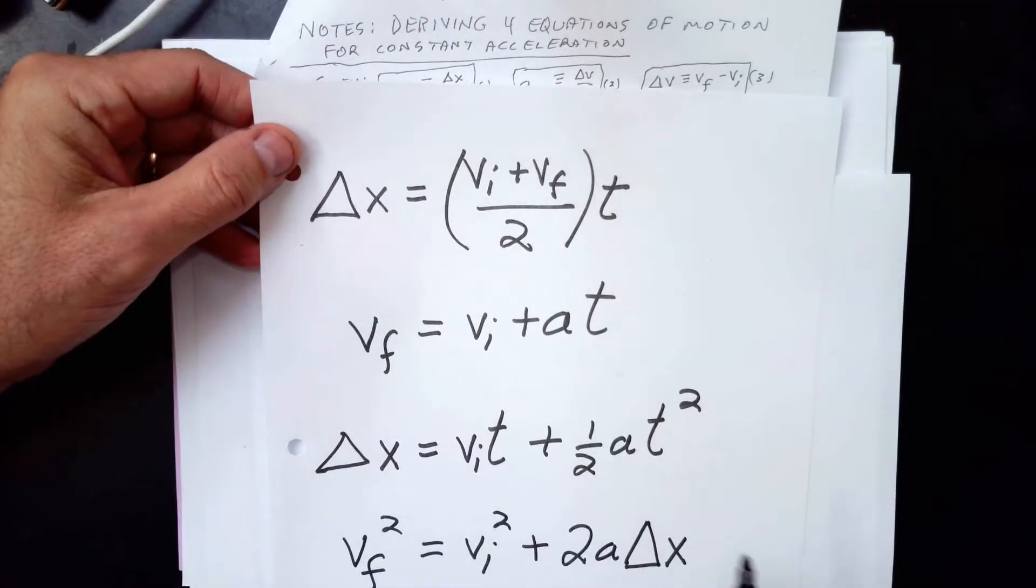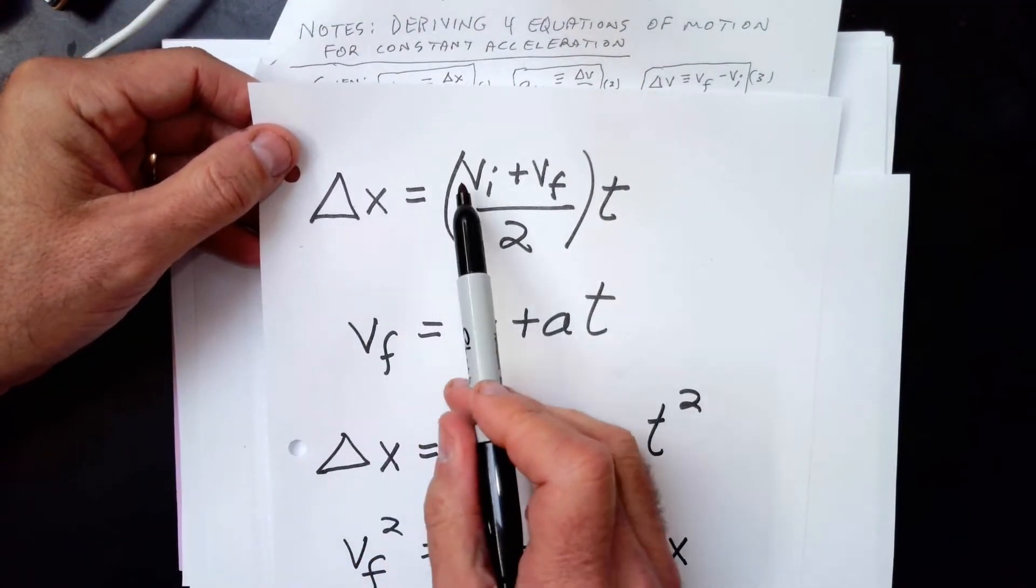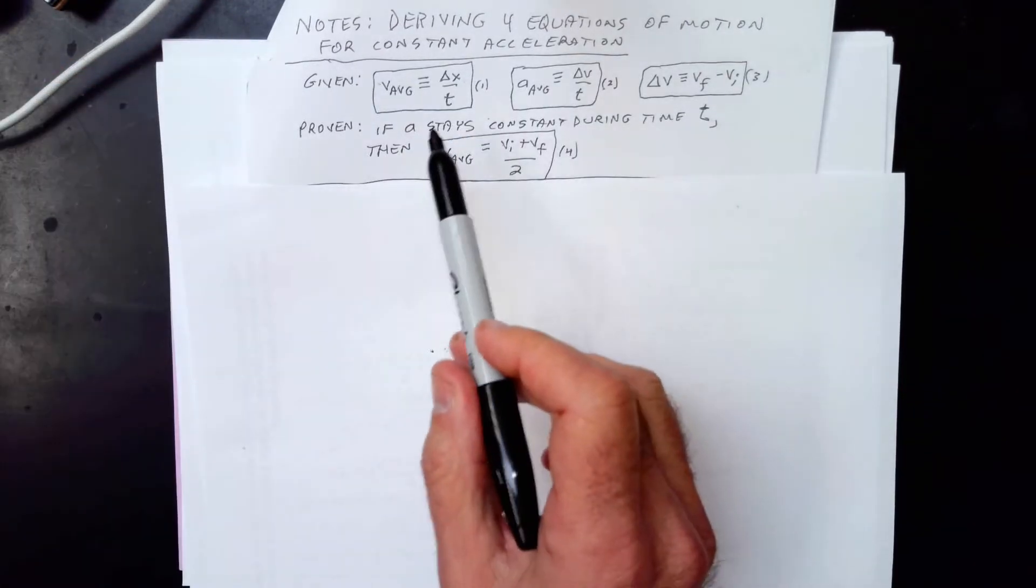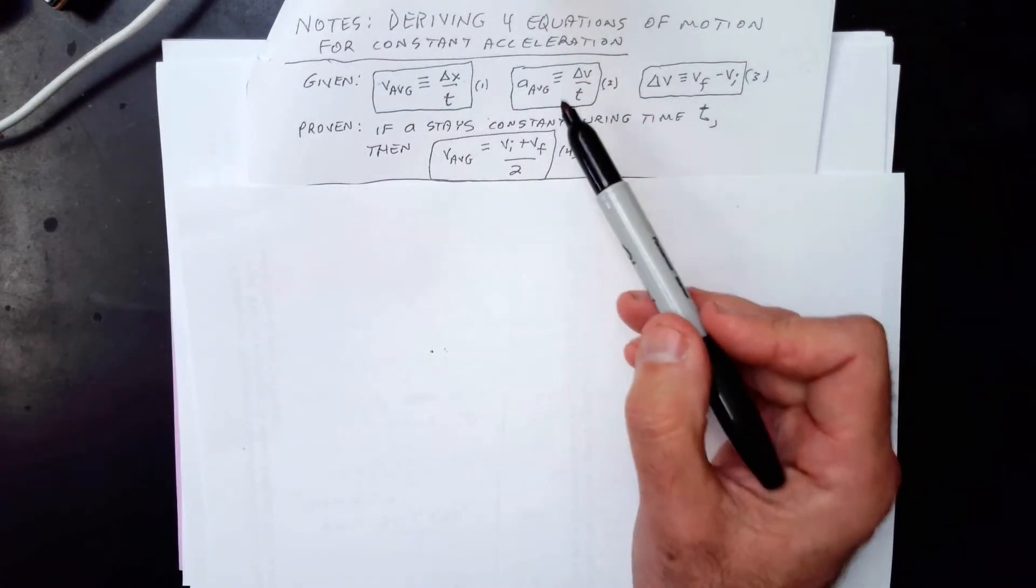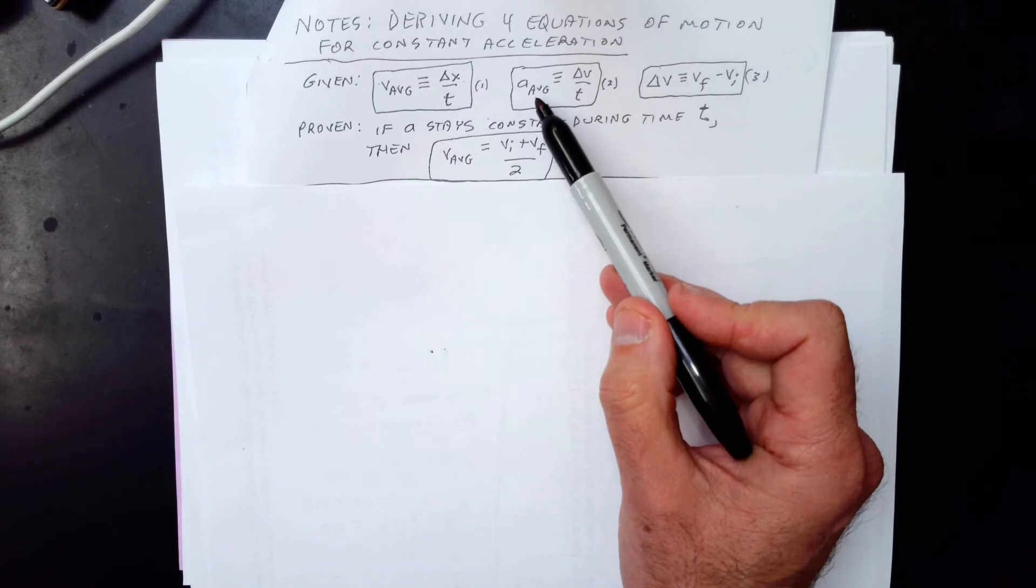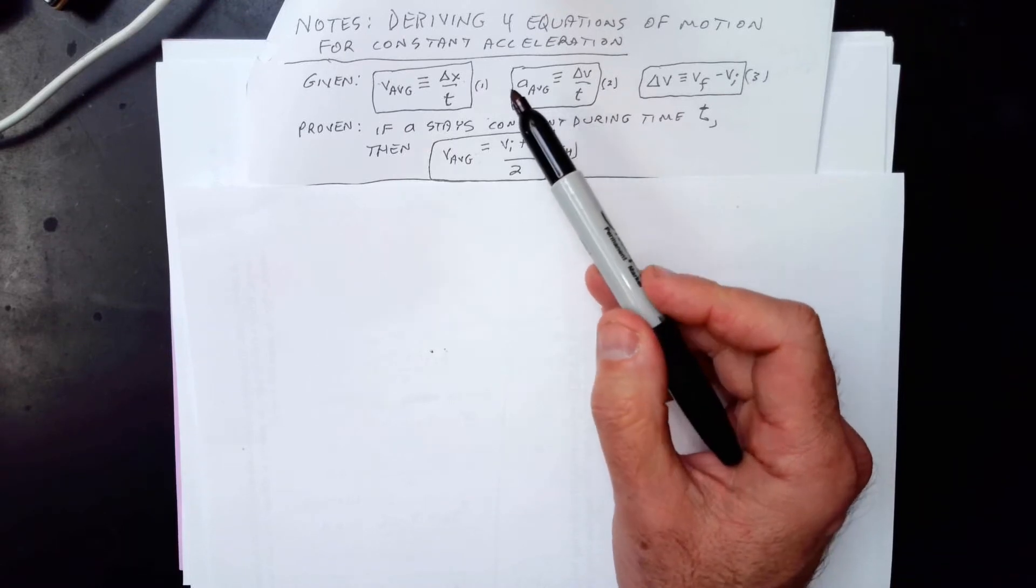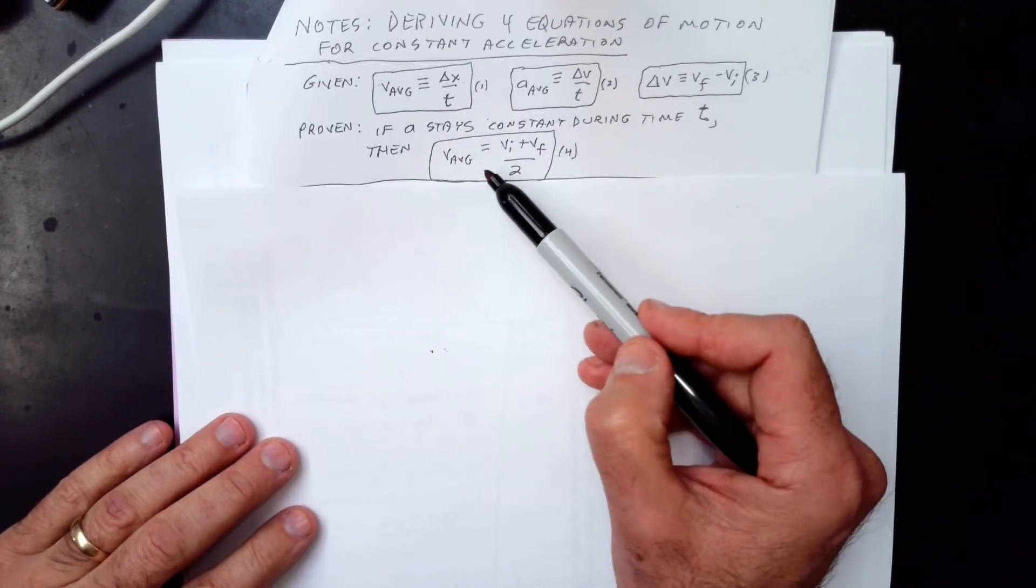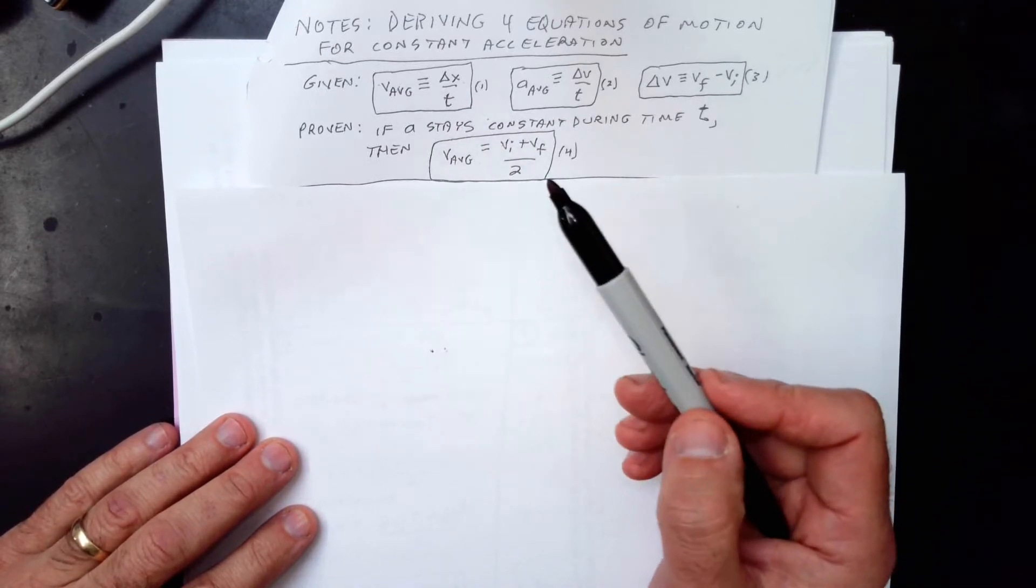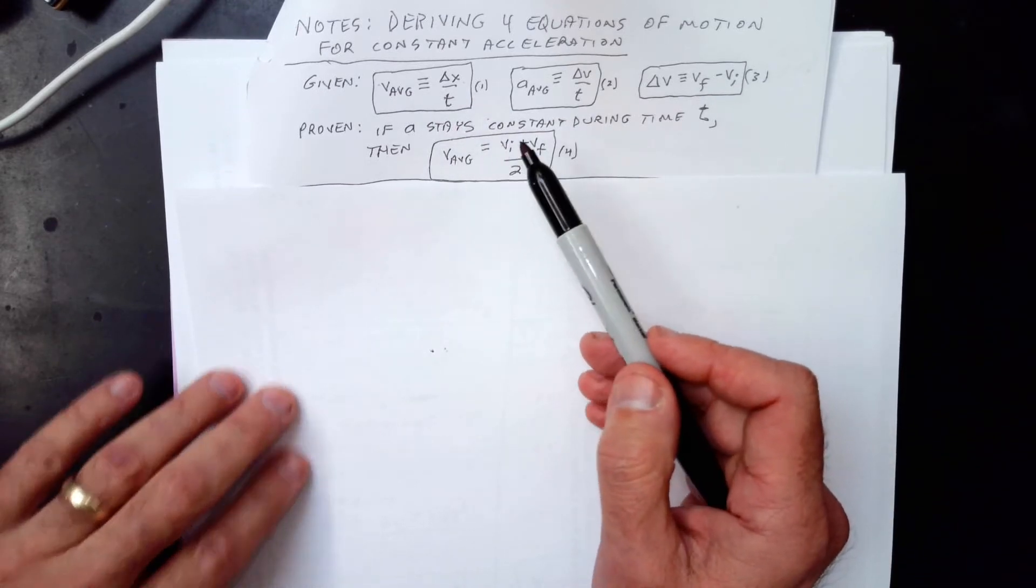And let's think about how we would derive or prove equation one, this first one here. Look at what it has, these four letters. So you look at your givens and you look for those four letters. We're not going to use this one because that has a in it, right? But if we look at this one and this one, it has all the letters, these two combined have all the letters we want.